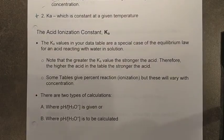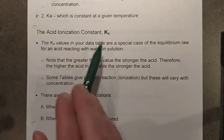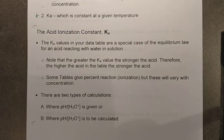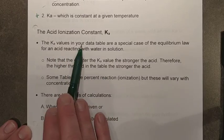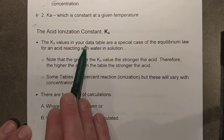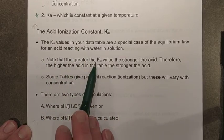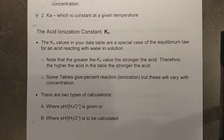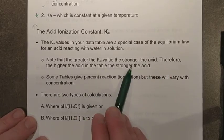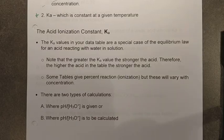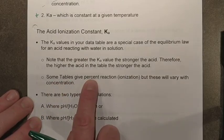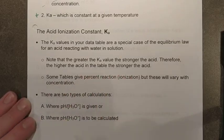Ka is really just your equilibrium constant or equilibrium law expression, but now applied specifically to acids. We'll see on our data table that Ka values are listed alongside acids and bases. The bigger the Ka value, the stronger or more ionized the acid. For the six strong acids on your table, it just says the K value is very large, meaning you're dealing with a quantitative situation. Some tables give percent ionization instead, but we'll ignore that concept here.